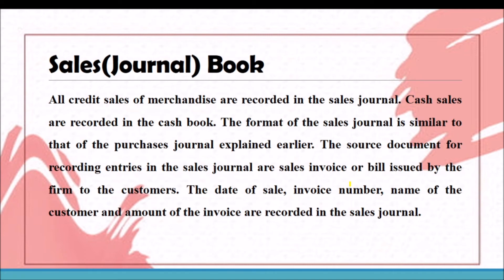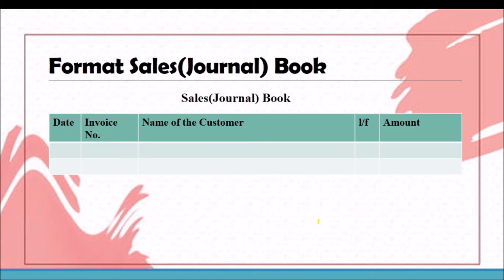Another book is the sales journal or sales day book. In the purchase day book we recorded all credit purchases. In the sales day book or sales journal, we record only credit sales transactions — because cash sales are already recorded in the cash book. The format of the sales book includes: date column, invoice number, name of the customer (to whom the product is sold), ledger folio, and amount. Always remember the format — it is very important.